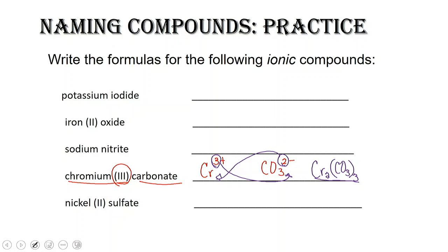You can pause the video now and try the rest of these on your own, and when you come back we'll go over the answers together. Potassium iodide — we simply write down our ions first. Potassium is in group 1, so it has a plus one charge. Iodide is in group 7, so it has a minus one charge.